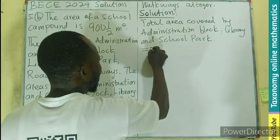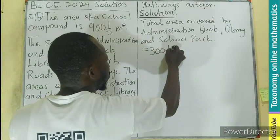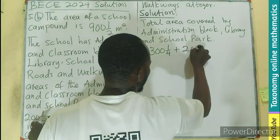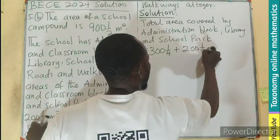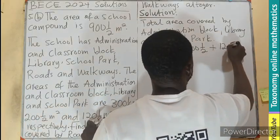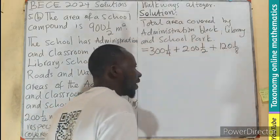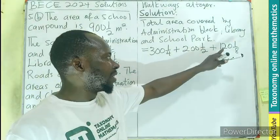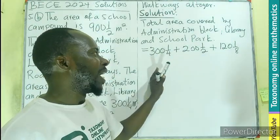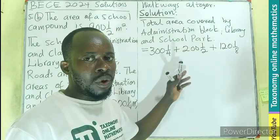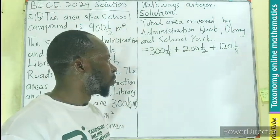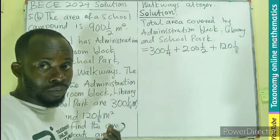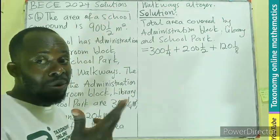Let me write it out first: 300 and 1/4, plus 200 and 1/2, plus 120 and 1/8, all in meters squared. We can add the whole numbers separately and the fractions separately, or we can convert them into improper fractions.